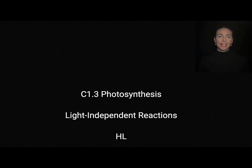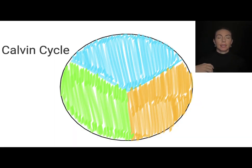In this video, we'll talk about the higher level content from C1.3 on photosynthesis, particularly the light independent reactions. The light independent reactions are more commonly known as the Calvin cycle.